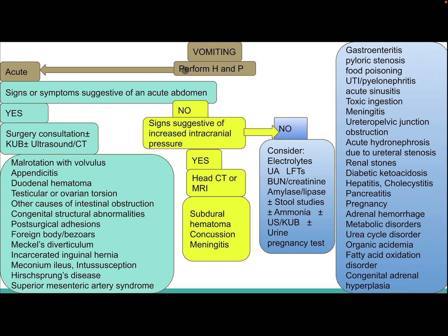When approaching a child with vomiting after history and physical examination, if there are acute signs or symptoms suggestive of an acute abdomen, surgical consultation is warranted with KUB, ultrasound, and CT. Differential diagnosis may include malrotation with volvulus, appendicitis, duodenal hematoma, testicular or ovarian torsion, other causes of intestinal obstruction, congenital structural abnormalities, post-surgical adhesion, foreign body, bezoars, Meckel's diverticulum, and incarcerated inguinal hernia.